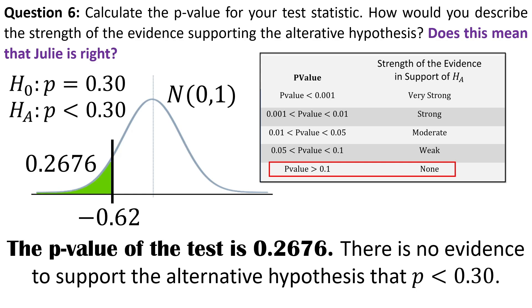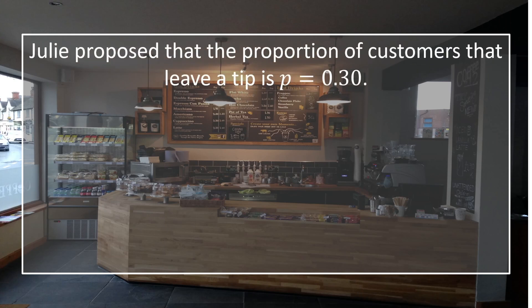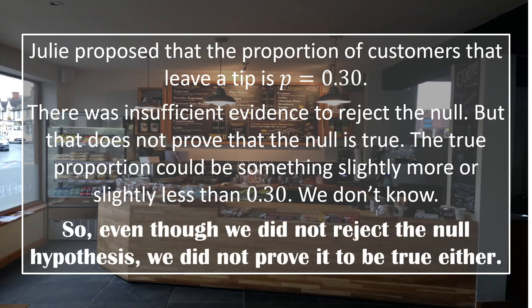Finally, does this mean that Julie, who claimed the true proportion is 30%, is correct? There was insufficient evidence to reject the null hypothesis, but that does not prove that the null is true. The true proportion could be something slightly more or slightly less than 0.3. Even though we did not reject the null hypothesis, we did not prove it to be true either.